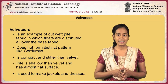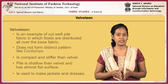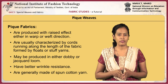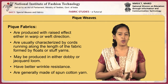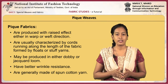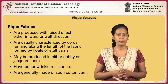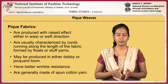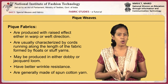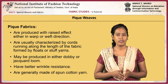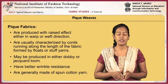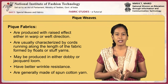Velveteen is used to make jackets and dresses. Piqué fabrics are produced with a raised effect either in the warp or weft direction. They are usually characterized by cords running along the length of the fabric, formed by floats or stuffed yarns. They may be produced in either a dobby or jacquard loom. They have better wrinkle resistance and are generally made of spun cotton yarn.